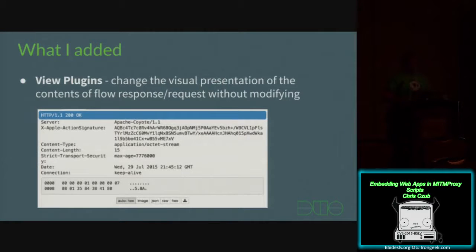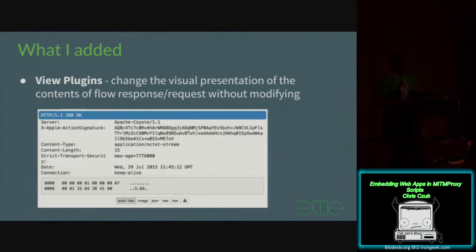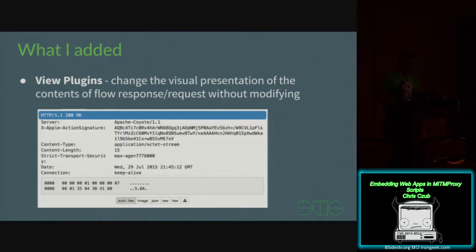A view plug-in changes the visual presentation of traffic going across the wire without actually changing what's being sent to the server or client. This is useful if you just want to transform the interface to view a different representation. For example, right here I'm showing off a hex view — you'll see at the bottom it says 'auto-hex' and there's a new hex tab. MitmProxy's Web UI didn't have hex support, so I created a little hex dump plug-in and now you can view hex in the browser. Super easy.